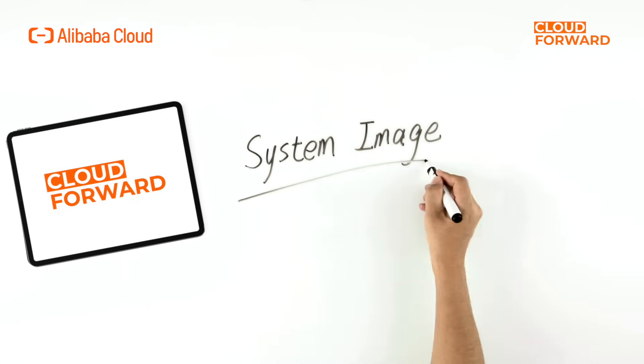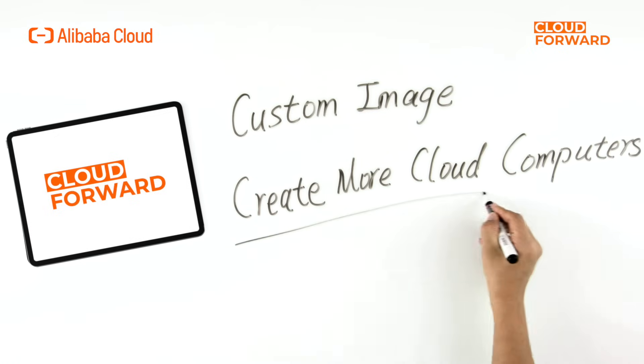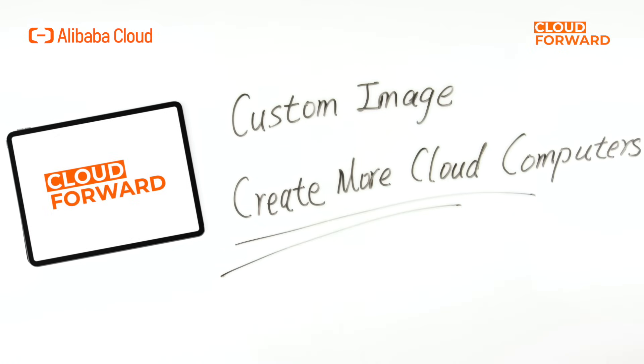To create multiple cloud computers with the same data at one time, you can use the system image, which is basically a data backup that covers the operating system, initial application data, and other necessary data. You can also create a custom image from a ready-made cloud computer with everything set up as needed, and then create more cloud computers from this custom image.